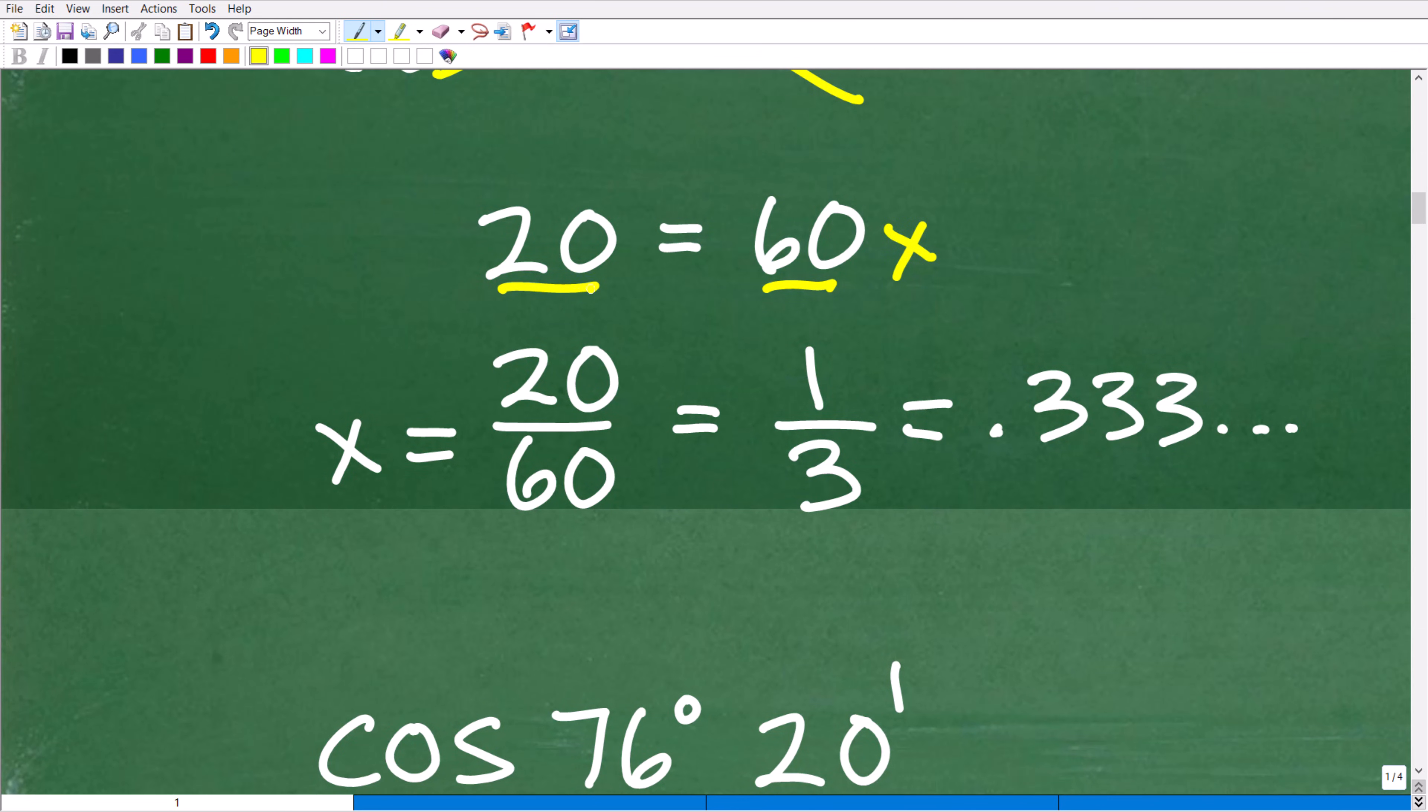So we're going to solve for x here. We're just going to divide both sides of the equation by 60. And what do we get? We get x is equal to 20 over 60, which is one-third, which is 0.333 repeating. That goes on forever and ever. So 20 minutes is the same thing as 0.3 repeating or 0.333 forever degrees.